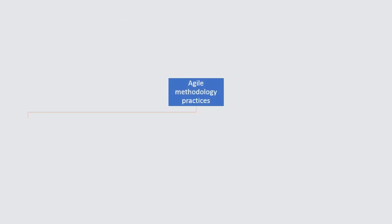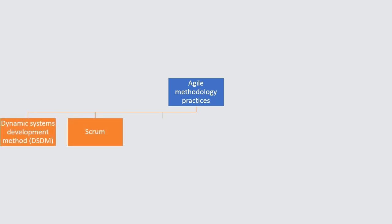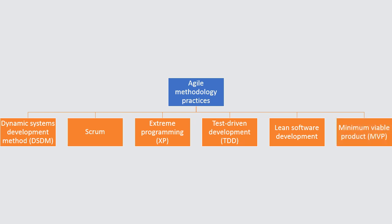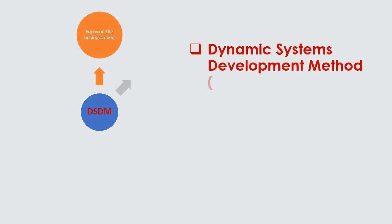Agile methodology practices are: Dynamic Systems Development Method (DSDM), SCRUM, Extreme Programming (XP), Test Driven Development (TDD), Lean Software Development, and Minimum Viable Product (MVP).